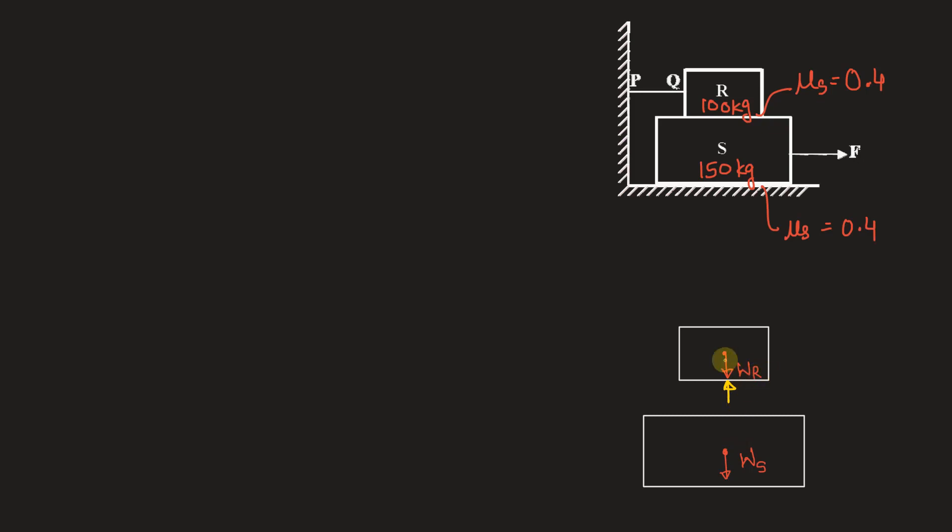And therefore, friction force between these two blocks can be found out using this normal reaction into mu S. Now because this block is moving forward, the frictional force on the lower block will be backwards and this will be of course forward. The friction force on this block will be in this direction. And both these friction forces will be equal in magnitude to each other which will be mu S into WR because that's what the normal reaction is.